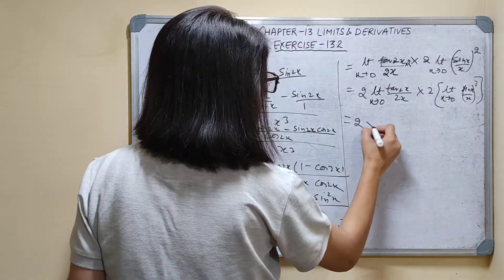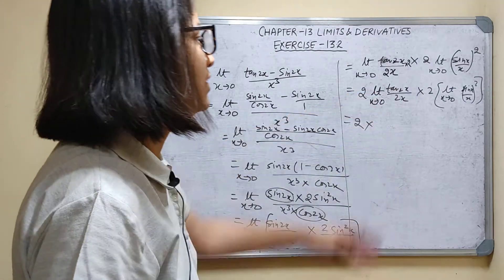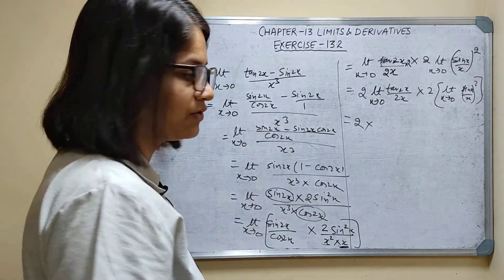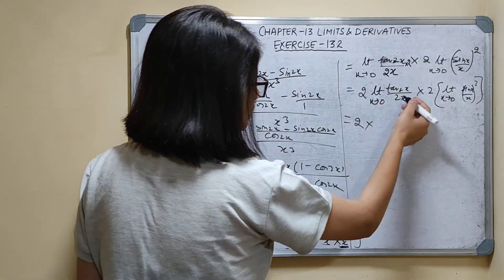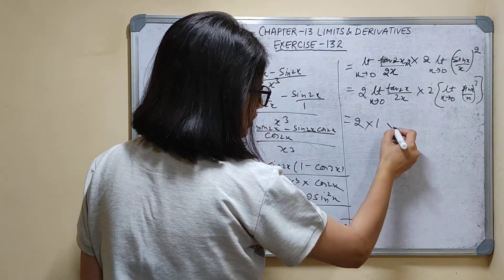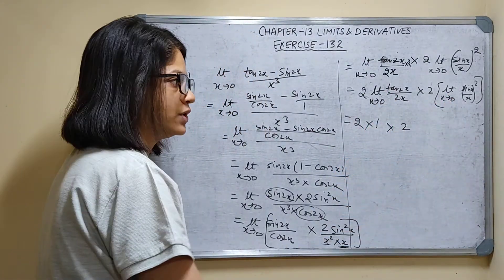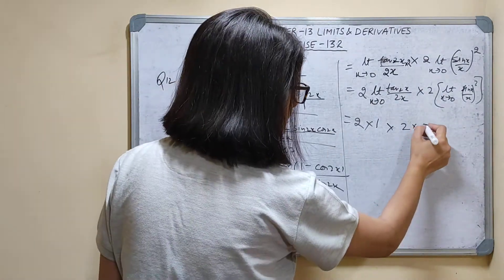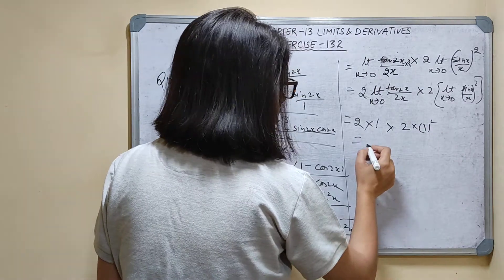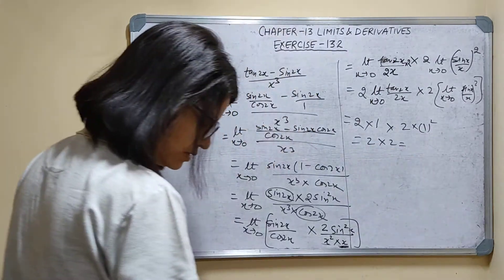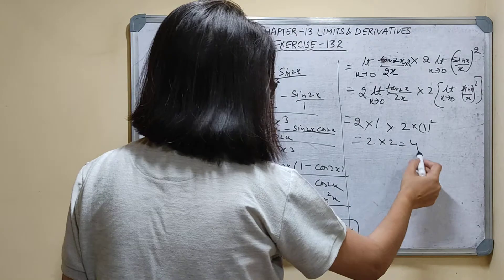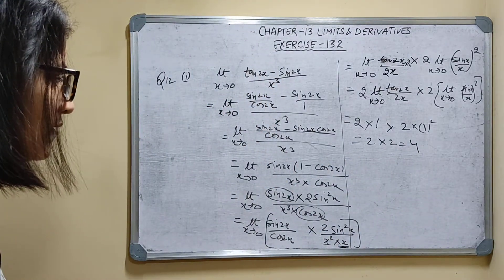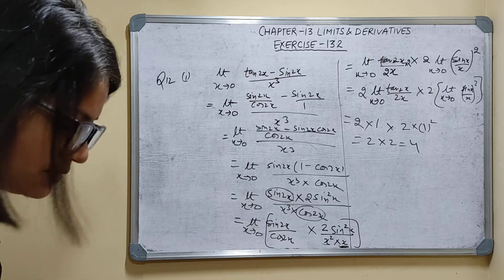So the result is 2 times 1 (from tan 2x/2x) times 2 times (sin x/x)² = 1 squared = 1. Therefore the answer is 4.